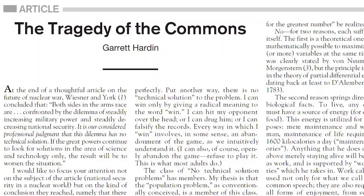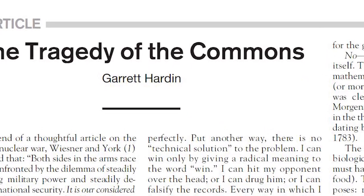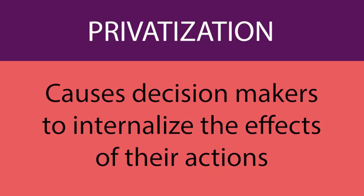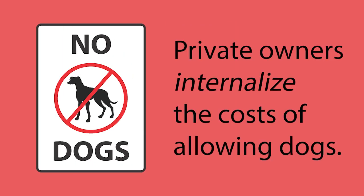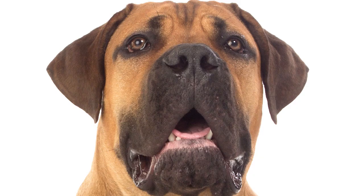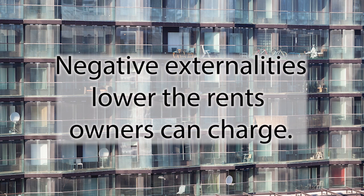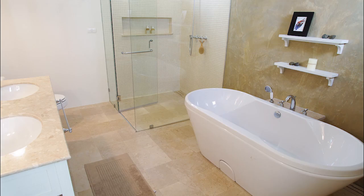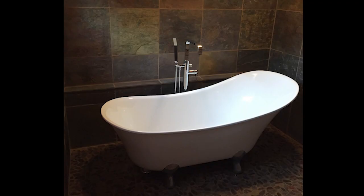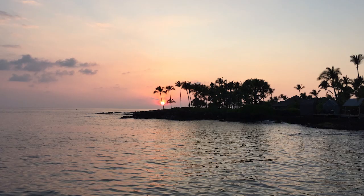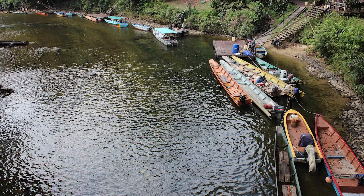The literature shows that the voting solution leads to efficient outcomes even in the more realistic case of some dogs being more of a nuisance than others. As a last solution, Garrett Hardin pointed out that privatization can solve some externality problems. Private ownership causes decision makers to internalize the effects of their actions. Private owners of apartment buildings sometimes prohibit dogs because negative externalities lower the rents owners can charge. And many public restrooms are messier than private ones because damage to a public bathroom is an external cost, whereas damage to a private bathroom is internalized by the owner. Unfortunately, it is difficult or impossible to privatize many things damaged by externalities, such as the oceans, rivers, air, and climate.